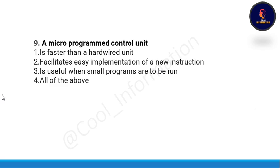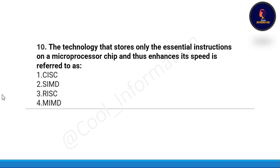Question number nine: a microprogrammed control unit — option A: is faster than a hardware unit. Option B: facilitates easy implementation of a new instruction. Option C: is useful when small programs are to be run. Option D: all of the above. The correct option is option B, which is facilitates easy implementation of a new instruction.